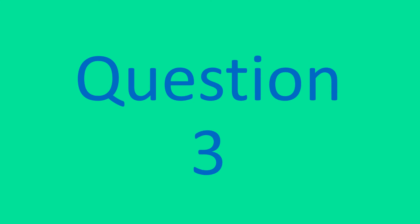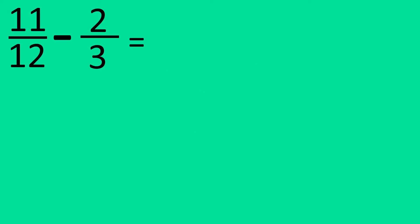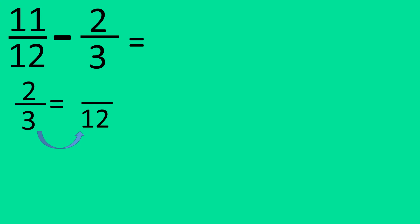Question number three. Here we have eleven over twelve minus two over three. Two over three will have to be changed into a different fraction because it doesn't have the same denominator. Whatever you do to the bottom, you must do to the top. So we need to know what we have to do to three to get to twelve. If you times three by four, you get twelve, so we're going to have to do that to the top. When you times two by four, you get eight.